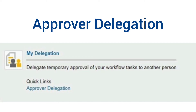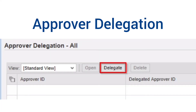Let us explore the first option of approver delegation, where the owner delegates the approval authority to somebody else. For this purpose, in the NWBC My Home, under My Delegation, please click on Approver Delegation. If the owner wants to create a new delegation, they will have to click on the Delegate button as shown on the screen.